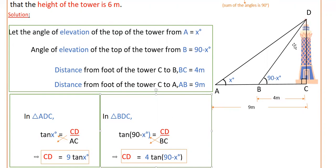If you take this triangle, in triangle BDC, tan 90 minus x is equal to CD by BC. So CD is equal to, here BC is 4 meters, so 4 into tan 90 minus x degrees.